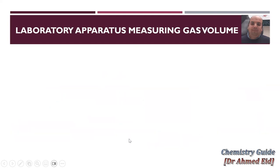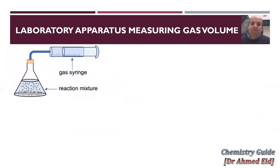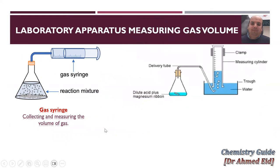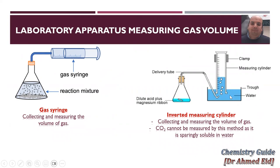When measuring gas volume, we can use a gas syringe — the reaction mixture is connected to the gas syringe for collecting and measuring the volume of gas. Also, we can use an inverted measuring cylinder collected over water. In this experiment, we add the acid to magnesium, using a delivery tube and a trough of water with an inverted measuring cylinder to measure the volume of gas. Remember that carbon dioxide cannot be measured by this method because it is sparingly soluble in water, which gives inaccurate results as part of the carbon dioxide dissolves.